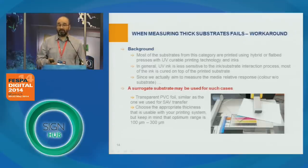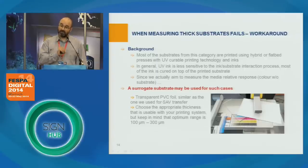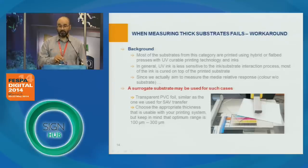Most thick substrates will be printed using UV curable technology. Since we aim to measure in relative mode — meaning the substrate is excluded — we can use a surrogate substrate: the thin transparent foil used previously to transfer from a self-adhesive liner. We can use it again to capture the characteristics of our printing combination when printing on glass, acrylic, or plexiglass. The minimum thickness depends on your printing system; I typically use between 100 and 160 microns as my ideal range for printing and measuring this surrogate substrate.